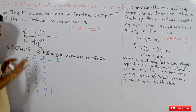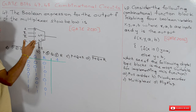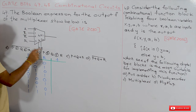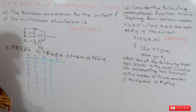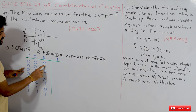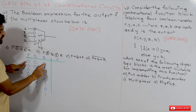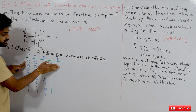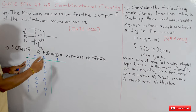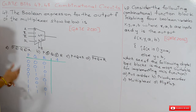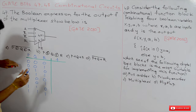Now here, the multiplexer given is a three-input multiplexer because we have inputs P, Q, and R. What is the function that is generated? With respect to R, based upon the inputs, how the function is behaving — we have to derive this function. After minimization, we have to determine what function is being produced.